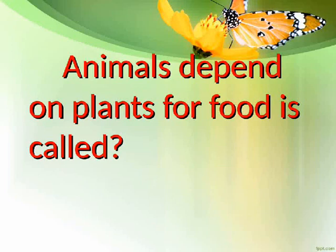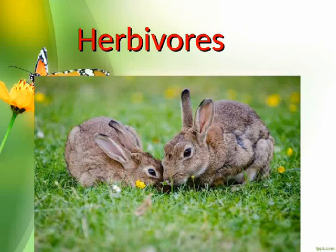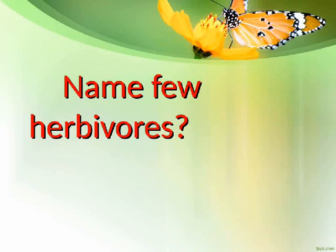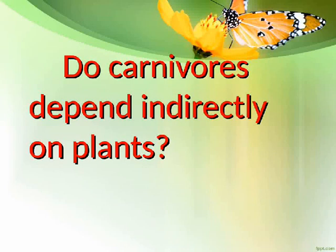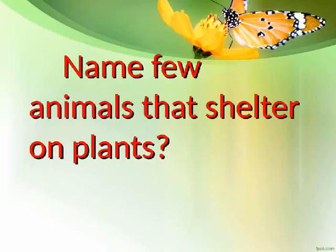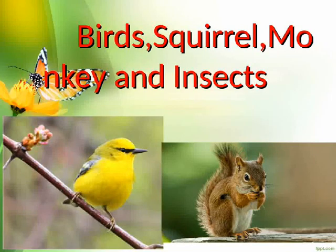Animals that depend on plants for food are called? Herbivores. Name a few herbivores. Cows, goat, or giraffe. Do carnivores depend indirectly on plants? Yes. Name a few animals that shelter on plants. Birds, squirrel, monkey, and insects.